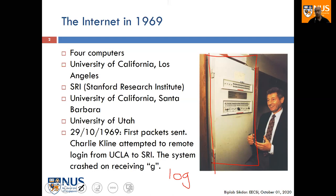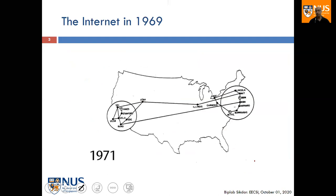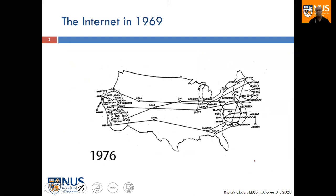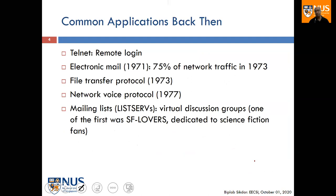This picture shows what a router was 40 years ago, and the person shown is Leonard Kleinrock, one of the founding fathers of the Internet. The Internet evolved from four nodes to more and more over time. Back in the 70s, popular applications included remote login, email — which was invented in 1971 and accounted for the majority of network traffic by 1973 — file transfer, and early forms of voice communication.